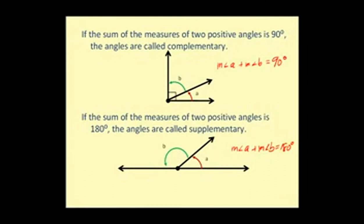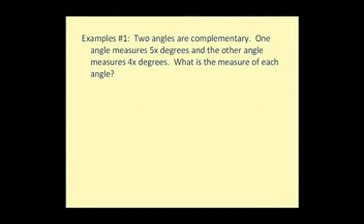Let's take a look at a couple examples. Two angles are complementary. One angle measures 5x degrees while the other measures 4x degrees. What is the measure of each angle?